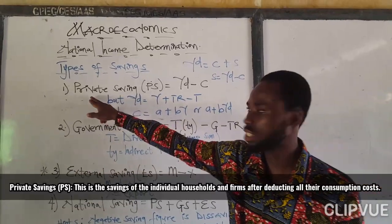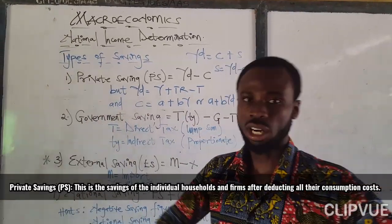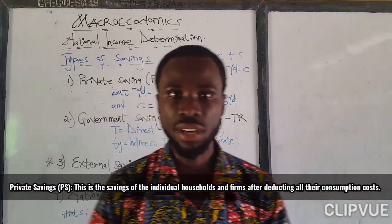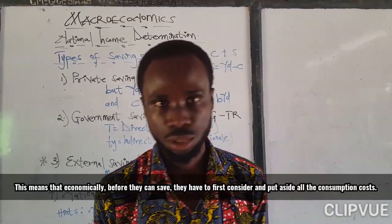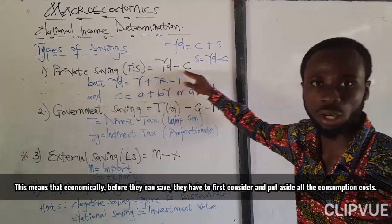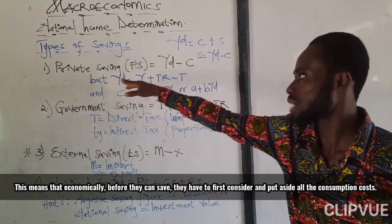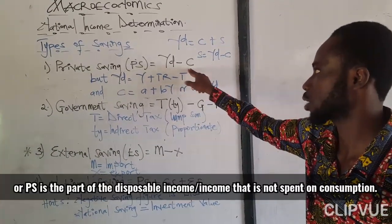Now, types of savings. The first type of savings is private savings. If you talk about private savings, you are talking about the savings of the household or the firms. And we are saying that disposable income minus consumption. Private savings is called disposable income minus consumption.